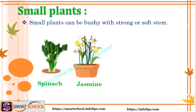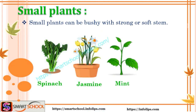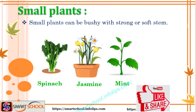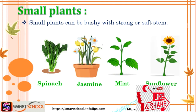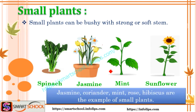The second one is jasmine, the third one is mint, and the next one is sunflower. So spinach, jasmine, mint, sunflower, coriander, rose, and hibiscus — these are all examples of small plants.